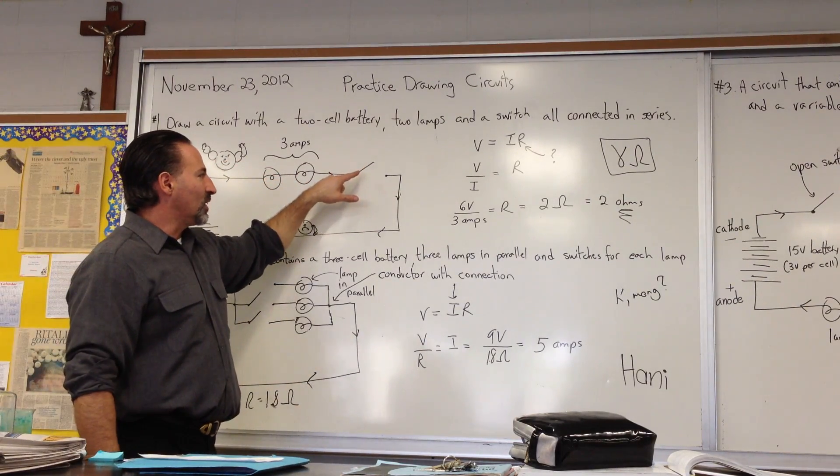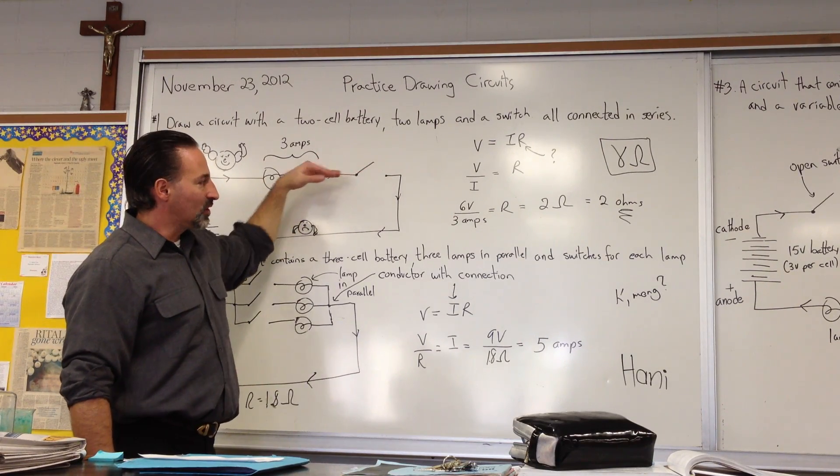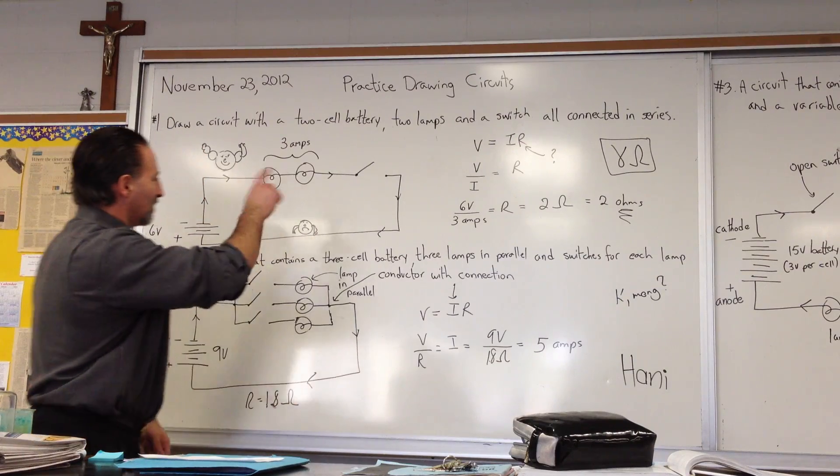And then after the lamp, there's a switch. So the switch is open right now, because no current will flow. If it closes the switch, then we have a complete circuit, and the current will flow.